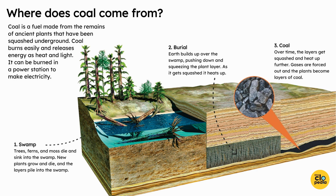3. Coal: Over time, the layers get squashed and heat up further, gases are forced out and the plants become layers of coal. Coal and diamonds are made from the same thing: carbon.